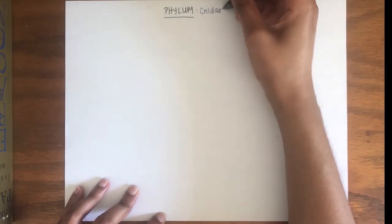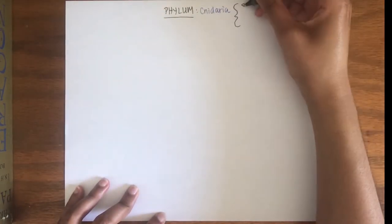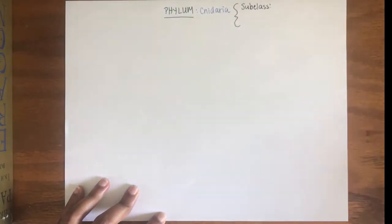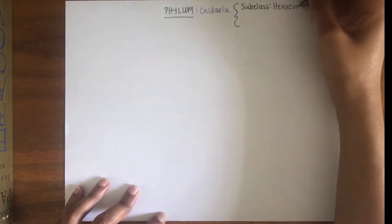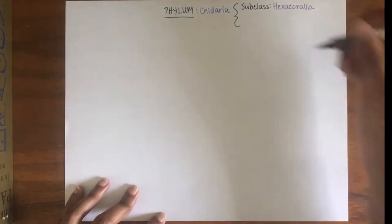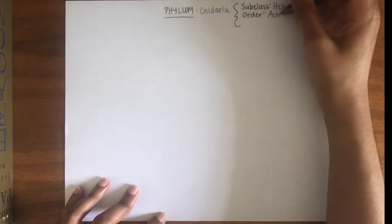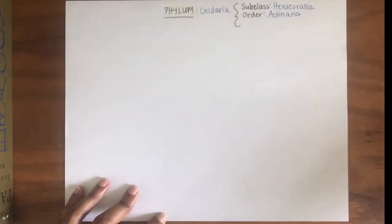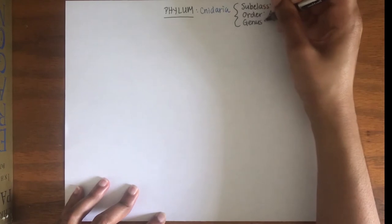to corals and jellyfish. Now let's start our drawing by writing out the classifications. As noted before, anemones are within the phylum cnidaria, the subclass hexachoralia, and the order actinaria. The genus and species we